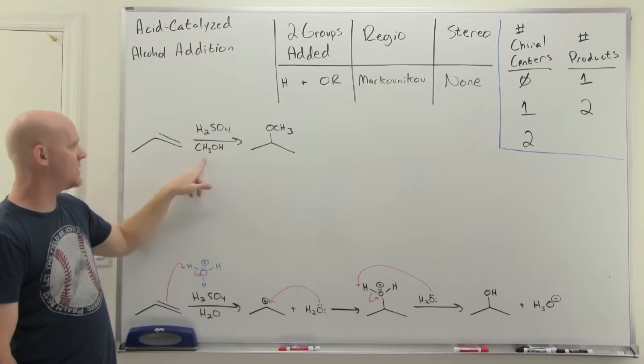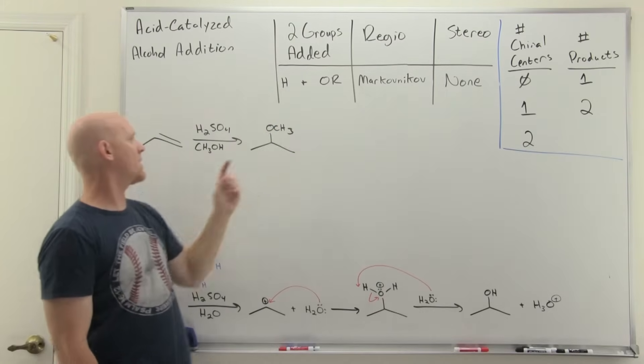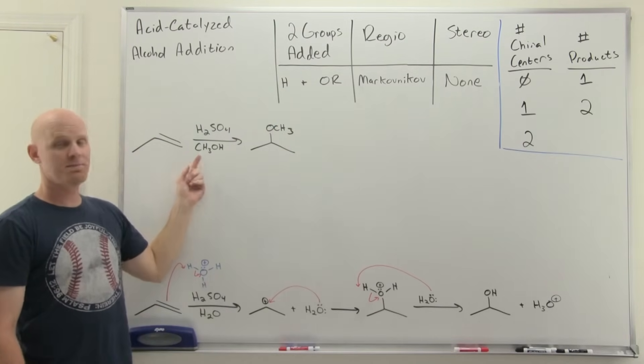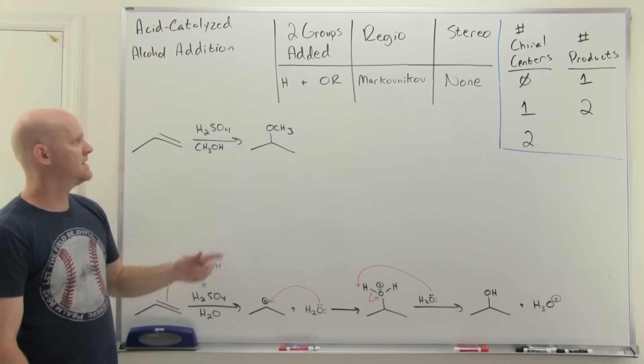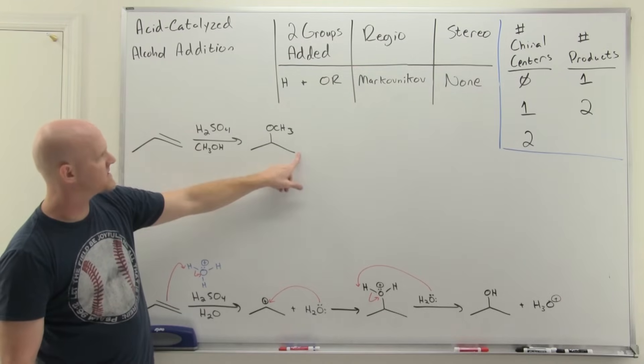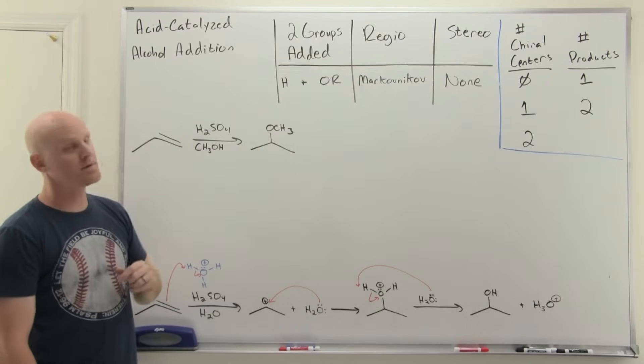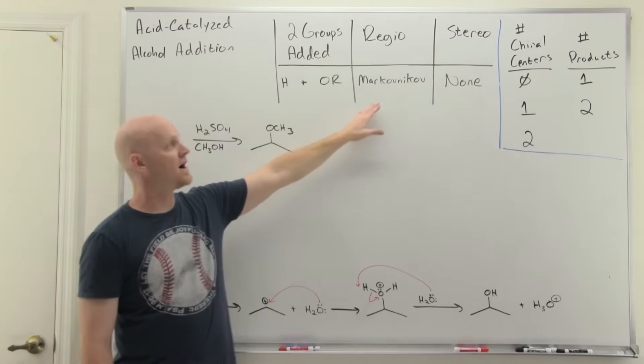In this case I've chosen methanol. So the idea is that now we're gonna add an H and an OR where the R in this case a methyl group just depends on which alcohol you use. So we've added an H on the less-substituted side and the OR on the more-substituted side, and that is Markovnikov addition.